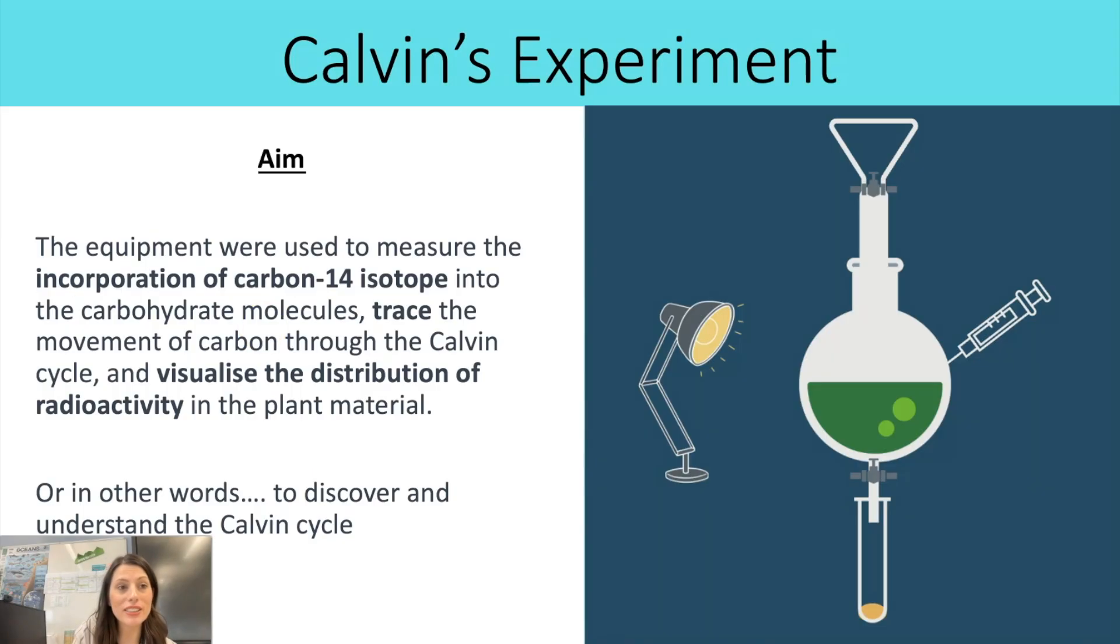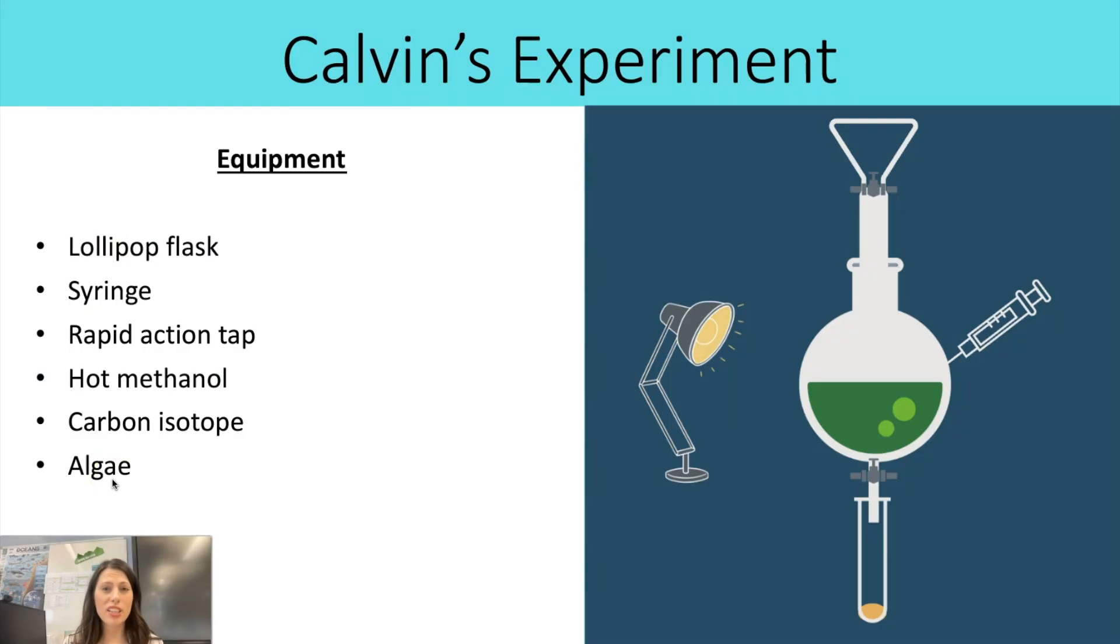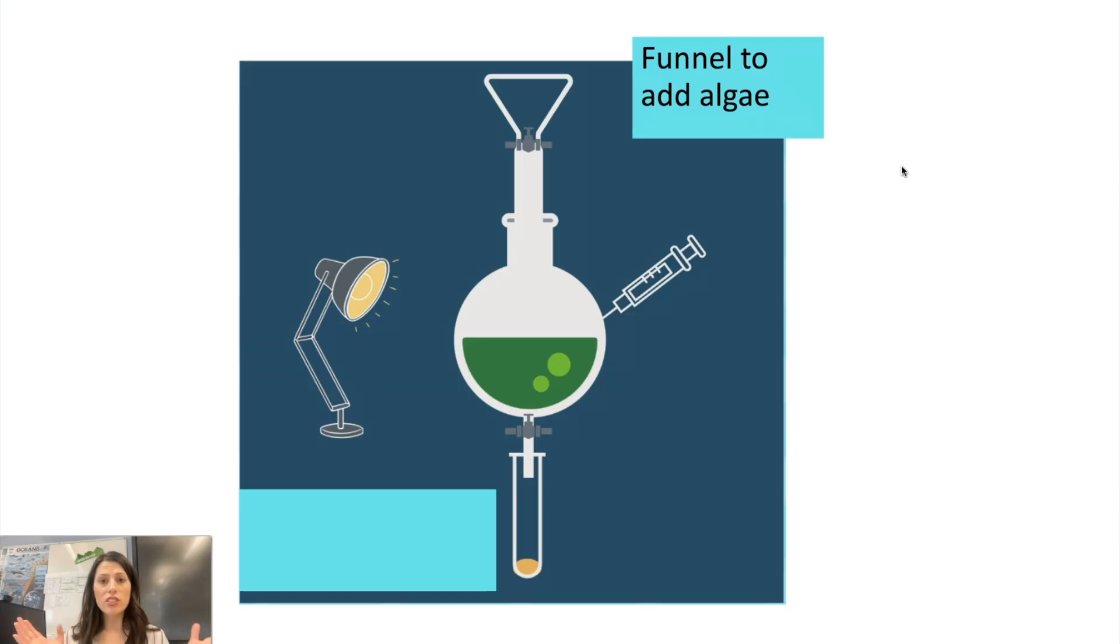So let's have a look at the equipment. This is like the key pieces of equipment that you might be asked to justify. So the lollipop flask, syringe, rapid action tap, hot methanol or alcohol ethanol, the carbon isotope and the algae. So first of all, we've got a funnel at the top here and that is so that you can add the algae into the flask.